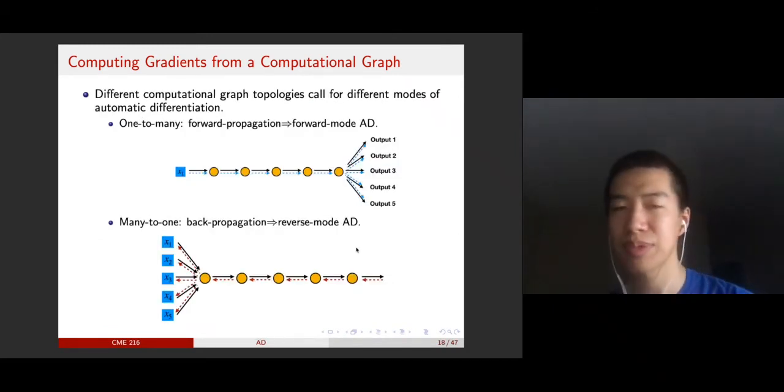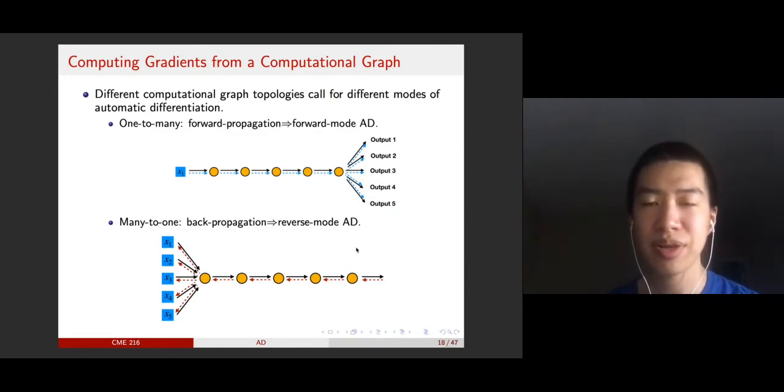Why do we have two modes for this kind of computation? This is because different computations might have different structures, so we might employ different strategies. For example, if I have a graph like this, with just one variable in the beginning, and at the last output it spreads to different output channels. In this case, the forward mode would be more efficient. You propagate the gradient here, you propagate here, and finally you just propagate in different ways.